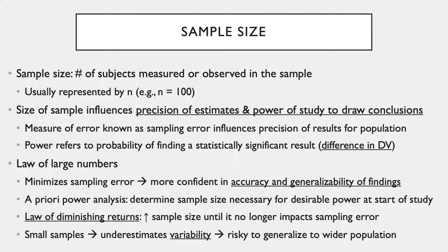A priori power analyses are used to determine the sample size necessary to have desirable power, done at the start of a research study. The law of diminishing returns states that as we increase sample size, we get closer and closer to the point where it no longer impacts sampling error. Ideally, we want a sample size sufficient for minimizing or completely avoiding sampling error. Larger samples increase precision by reducing error and increasing power, while small samples unfortunately underestimate variability, making them risky to generalize to wider populations.